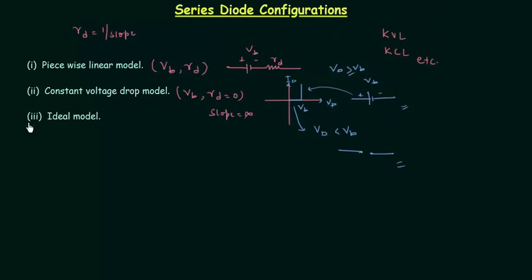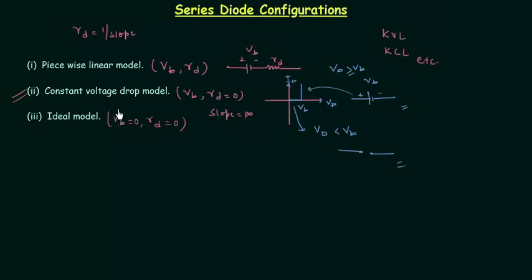The third model is the ideal model, in which both the barrier potential and diode resistance are equal to 0. Out of these three models, the constant voltage drop model will be used.